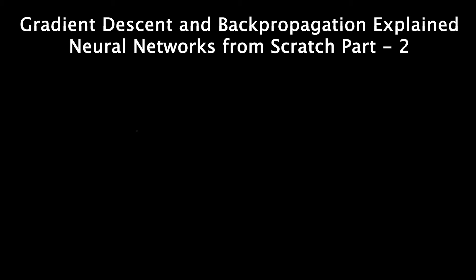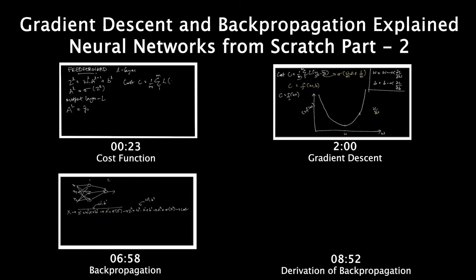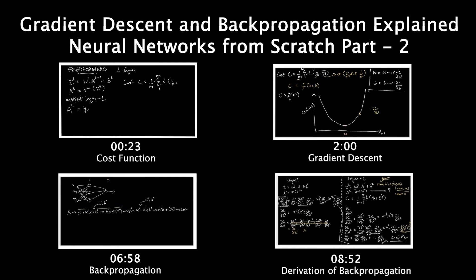Hello everyone and welcome back to my series on neural networks from scratch. This is part two where we look at the gradient descent process and see how the backpropagation algorithm works. We will derive the equations for the backpropagation algorithm, and in the next part we will implement our own neural network from scratch using just Python.